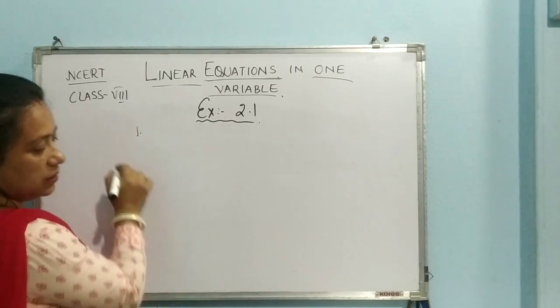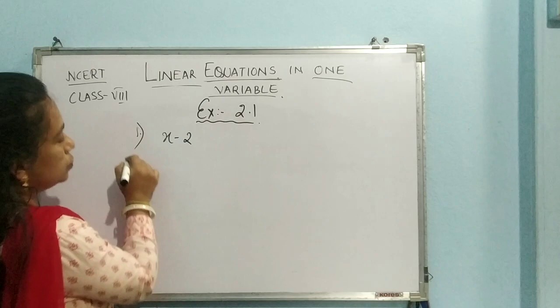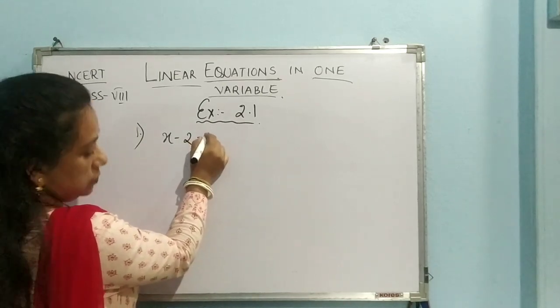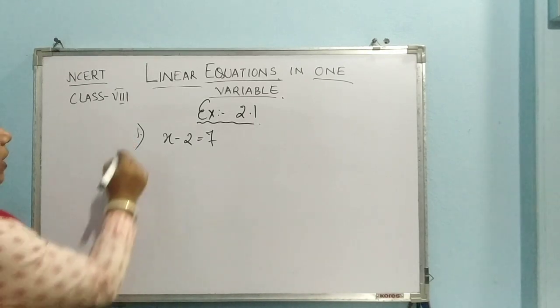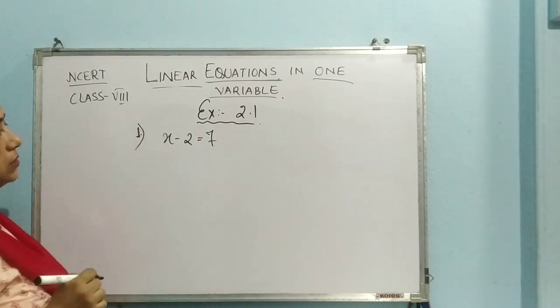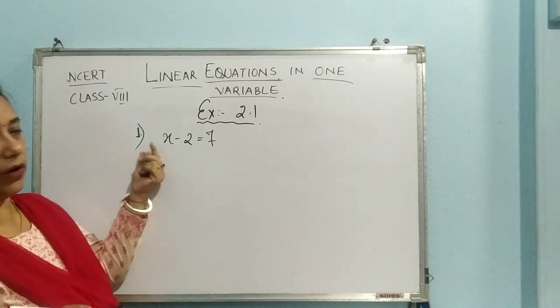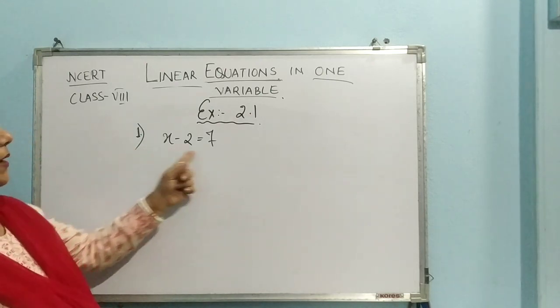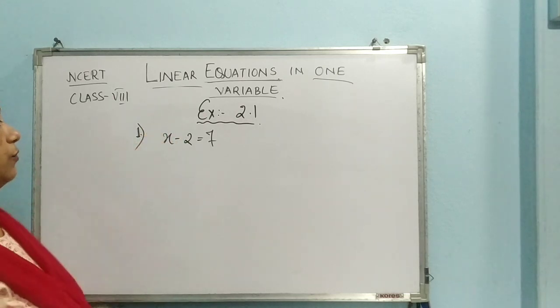So I am going to take the first question, x minus 2 equal to 7. So this is the question and they have asked us to solve this question. Whenever it has been asked to solve, it means that we have to find out the value of the variable. Here the variable is x, so we need to find out the value of x here.